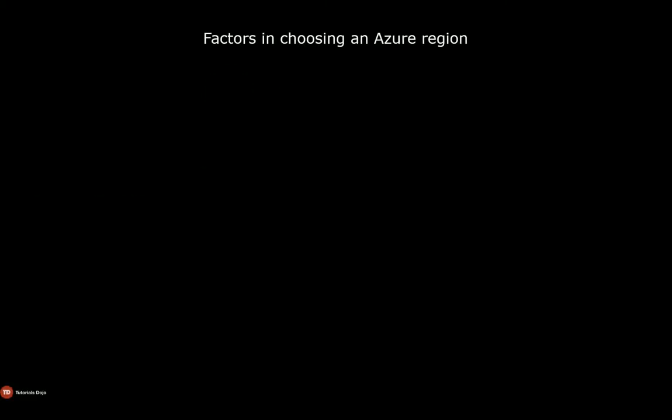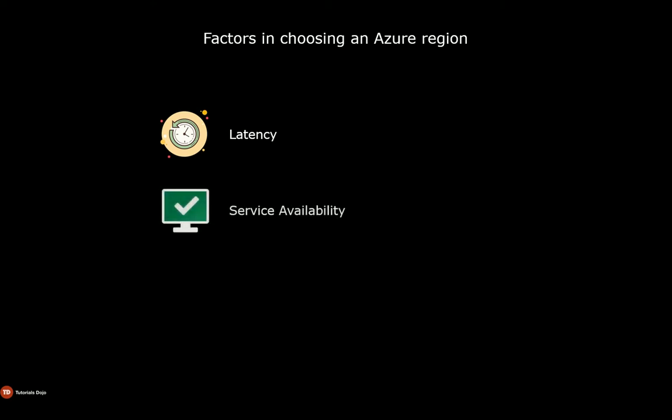There are multiple factors to consider when choosing a region to deploy your applications. First is latency — you need to choose a region where the majority of your users will be, so that latency will not be an issue. Remember that latency is the amount of time an application must wait for a request to complete, and it can directly affect performance. Second is service availability — newer regions tend to support fewer services than older regions, so you should check first if the services you need are supported in your preferred region.